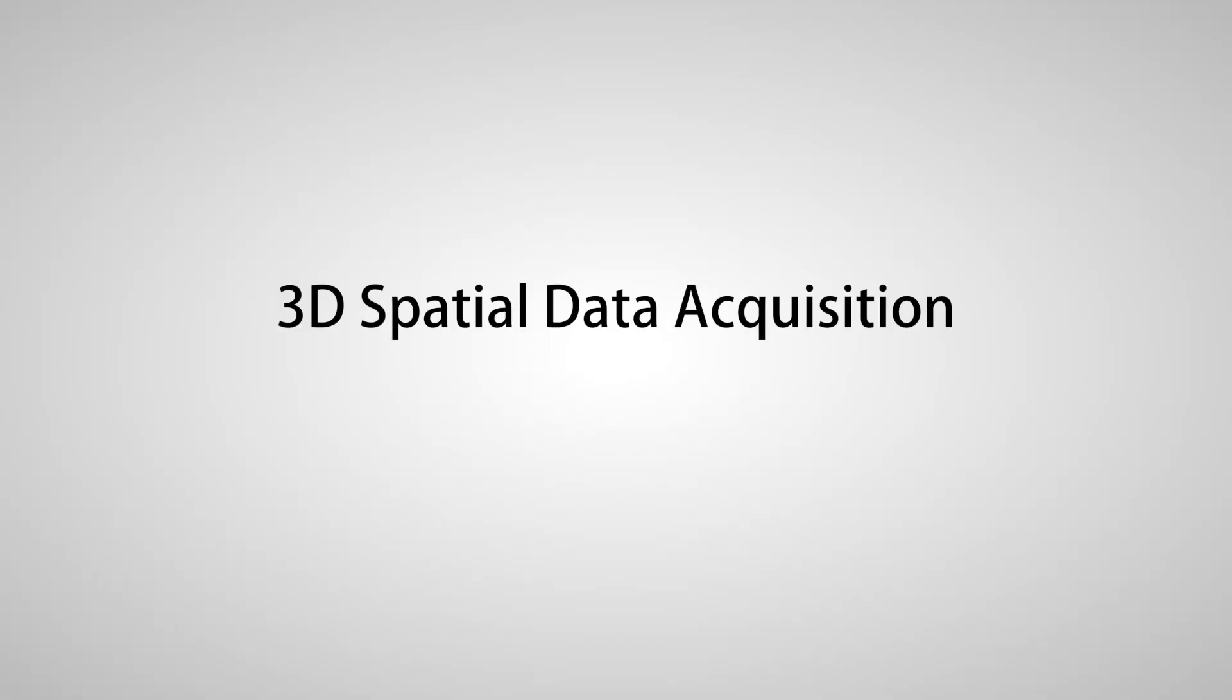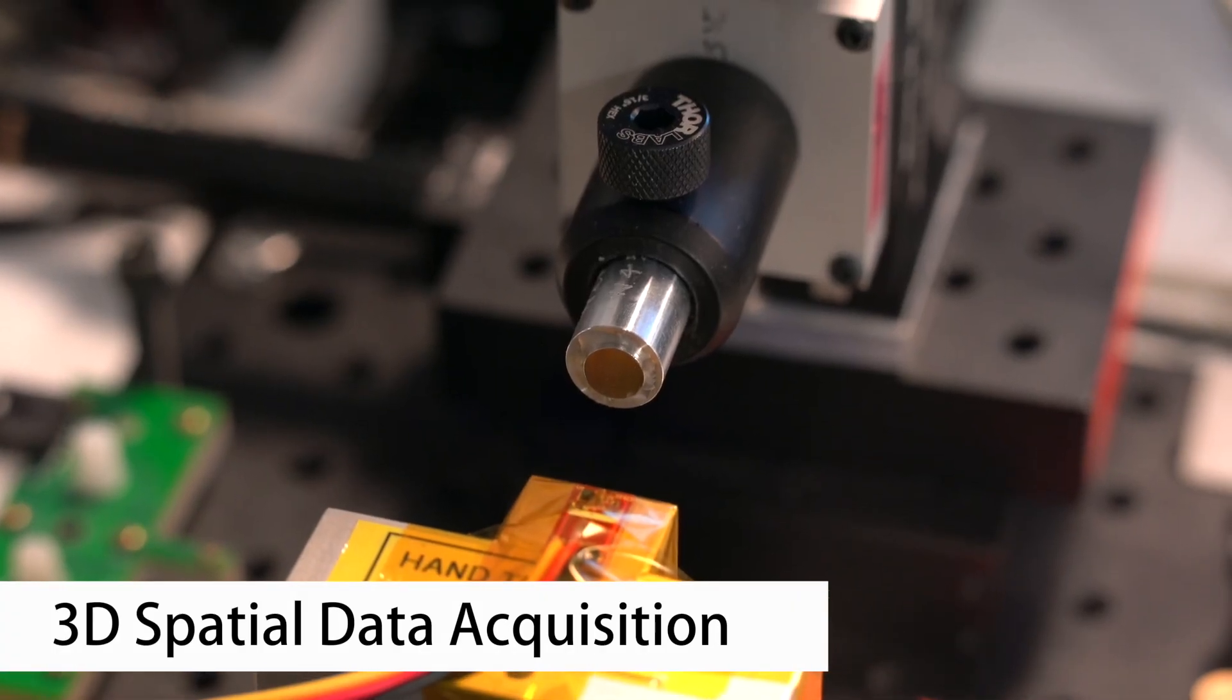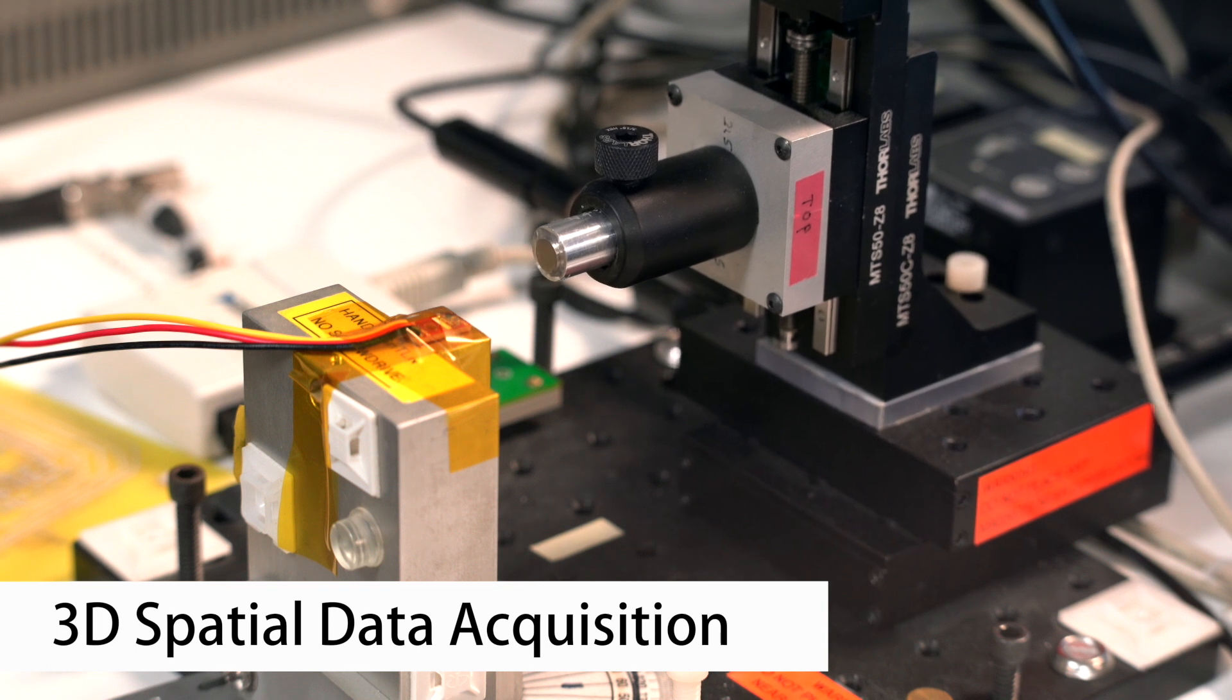We do this with our 3D spatial data acquisition system, which can be used for validating a design with actual physical parts. With this system, we place a TMR sensor in a fixed location and sweep the magnet in 3D space in front of the sensor.